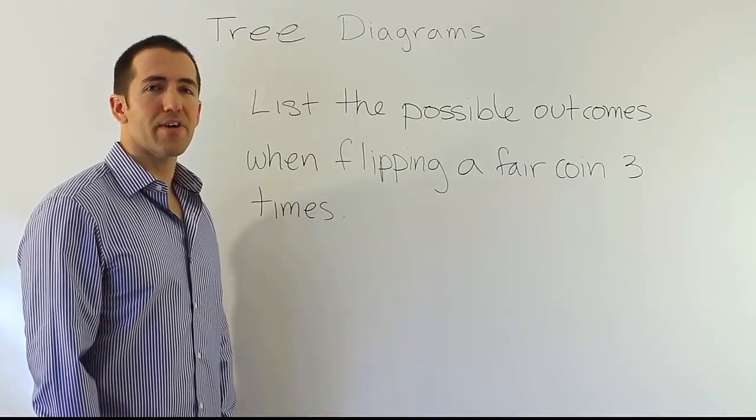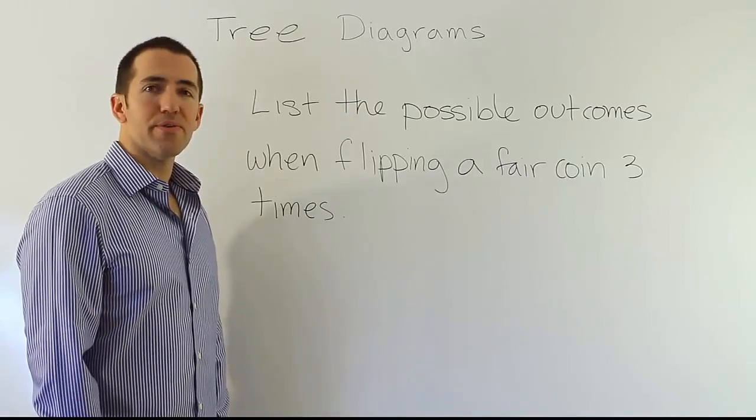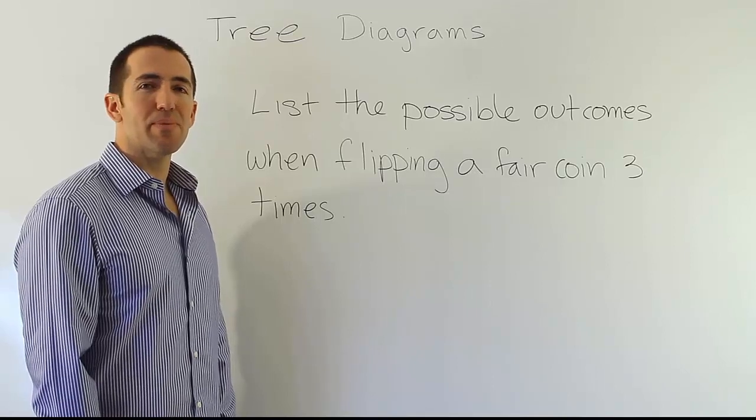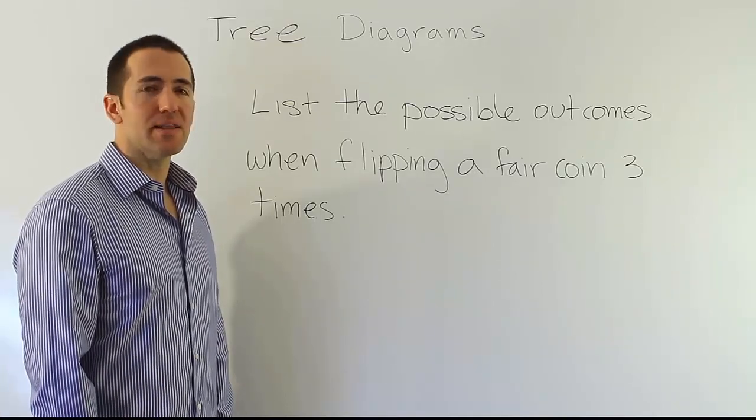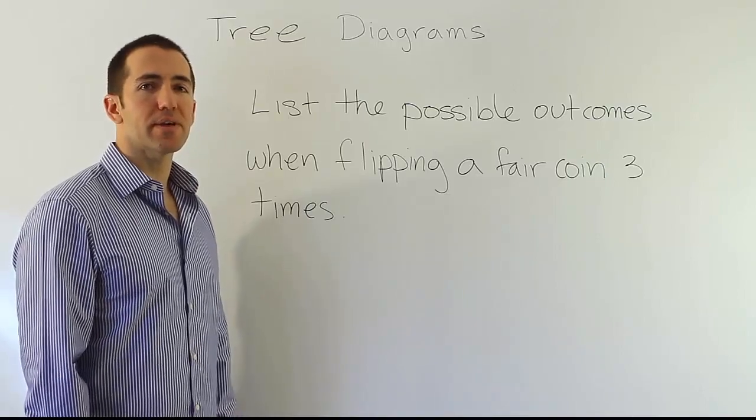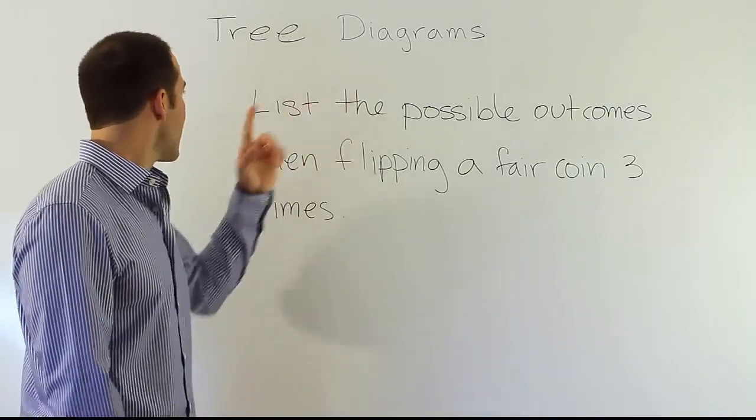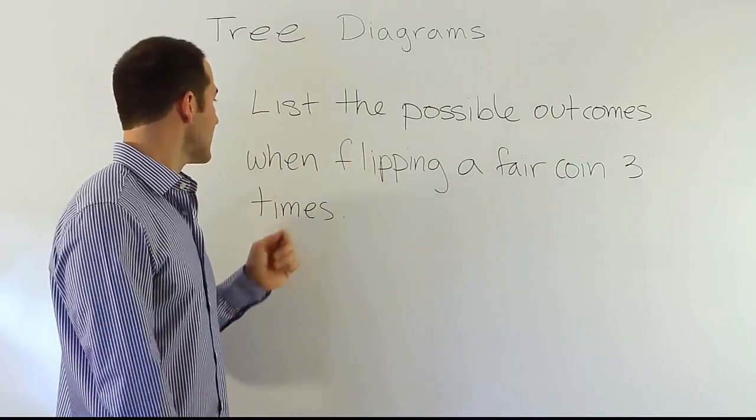In this video, we're looking at tree diagrams. Tree diagrams are helpful tools to help us list the sample space for a particular experiment. The sample space is the list of possible outcomes for the experiment. Let's take this problem. It says list the possible outcomes when flipping a fair coin three times.